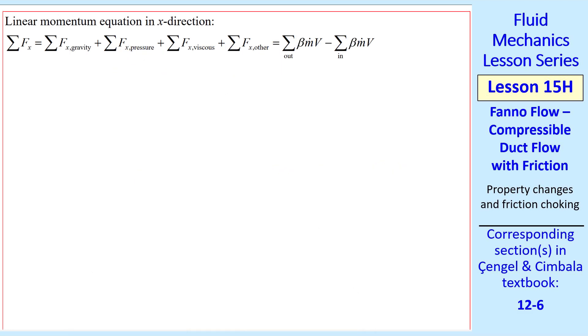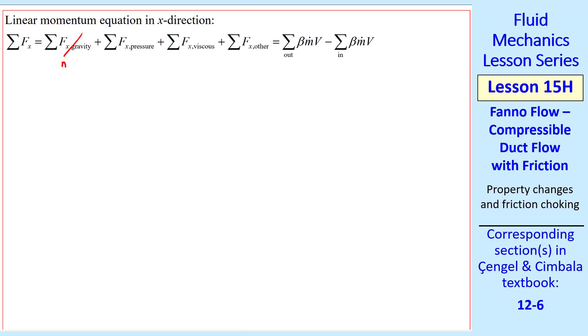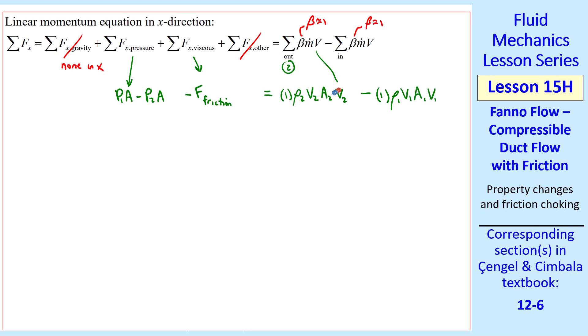Now let's look at the linear momentum equation in the x-direction, which we haven't discussed yet for Fanno flow. There's no gravity in the x-direction. There's no struts or other forces acting on the control volume. But there are pressure forces, which reduce to P1 A minus P2 A, same as Rayleigh flow. And we do have a viscous force this time, which is in the negative x-direction, which is negative F friction, acting to the left, trying to slow the gas down. On the right, beta is approximately 1 at both outlet and inlet. So at the outlet, or location 2, we have 1 times rho 2, V2, A2, which is the mass flow rate, times another V2, and with a similar term for the inlet, with subscripts 1 instead. We can drop the 2 and the 1 subscript on A, since it's a constant area duct. We divide by A and rearrange, and we get P1 plus rho 1 V1 squared equal P2 plus rho 2 V2 squared plus F friction divided by A. This is our linear momentum equation, which we'll call equation 3.